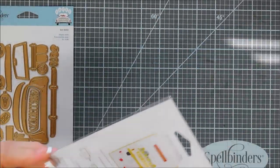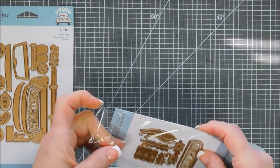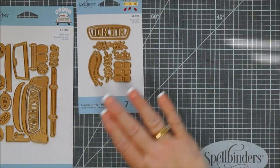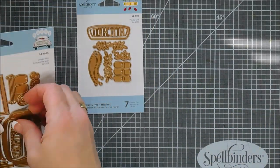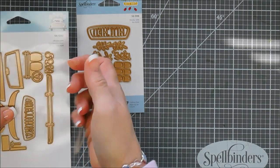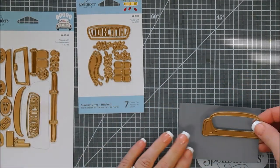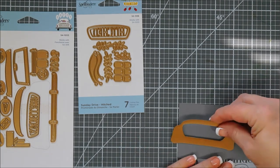Now the Sunday Drive set actually came out last month in the Spellbinders project kit, so if you have that there's an add-on available. If you guys want to check it out everything will be linked down below. This is the convertible base piece.